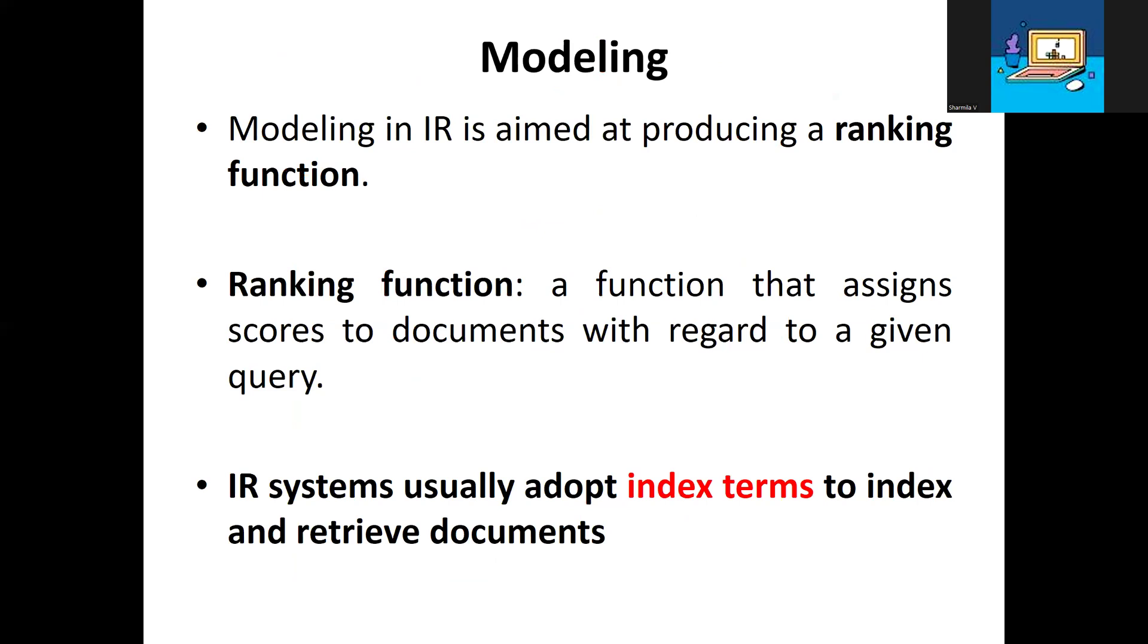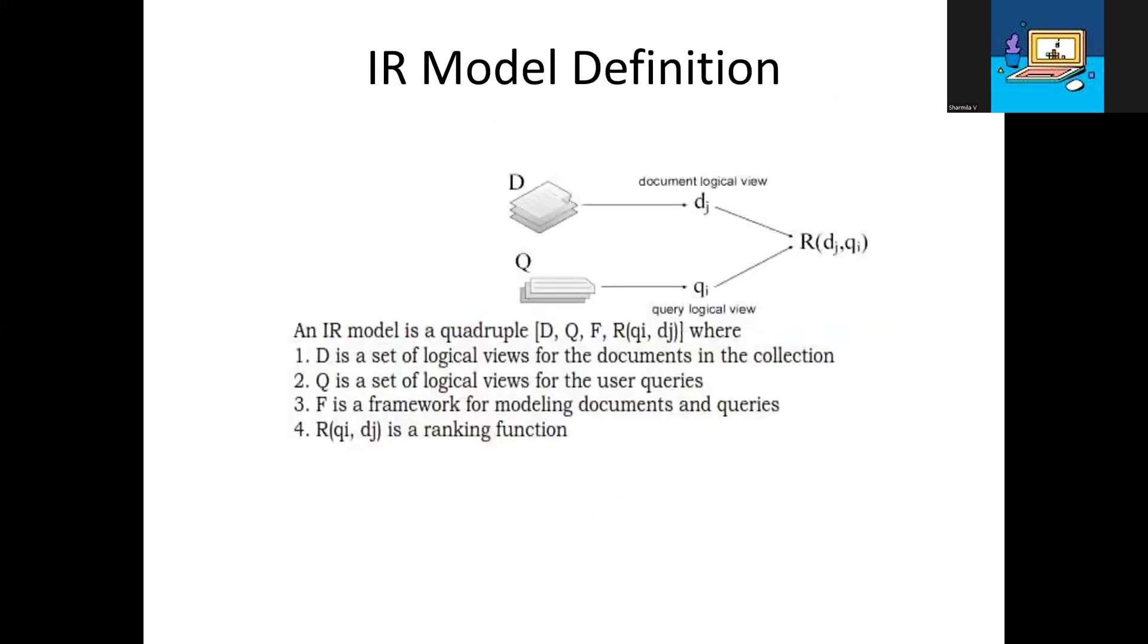Modeling in Information Retrieval Systems is aimed at producing a ranking function. A ranking function assigns scores to documents with regard to a given query. Each document receives a score indicating how relevant it is to the particular user. Using these relevance scores, we retrieve data in a ranked manner, prioritized by relevance.